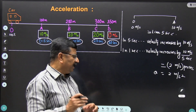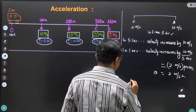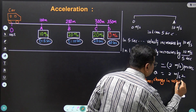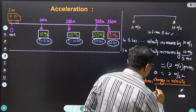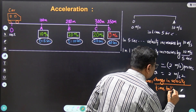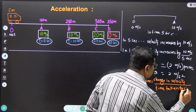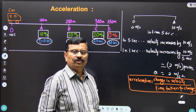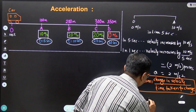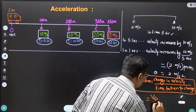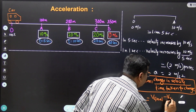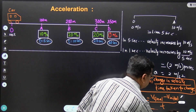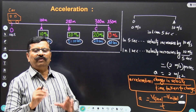So the acceleration is 2 meters per second squared, meaning the velocity of the car increases by 2 meters per second for every second. This is the acceleration. The definition of acceleration is: change in velocity divided by time. So the formula for acceleration is: a equals v final minus v initial, divided by time t.